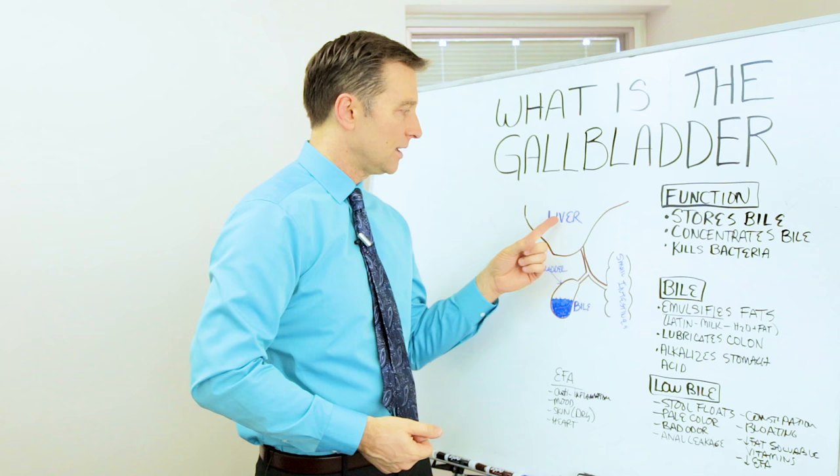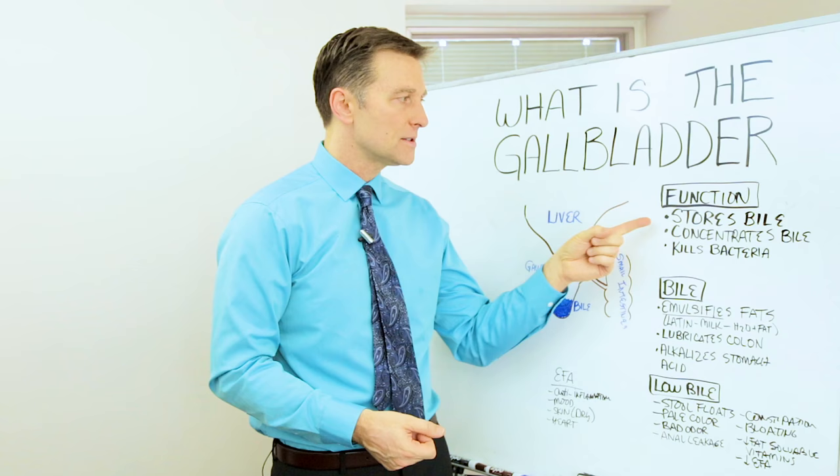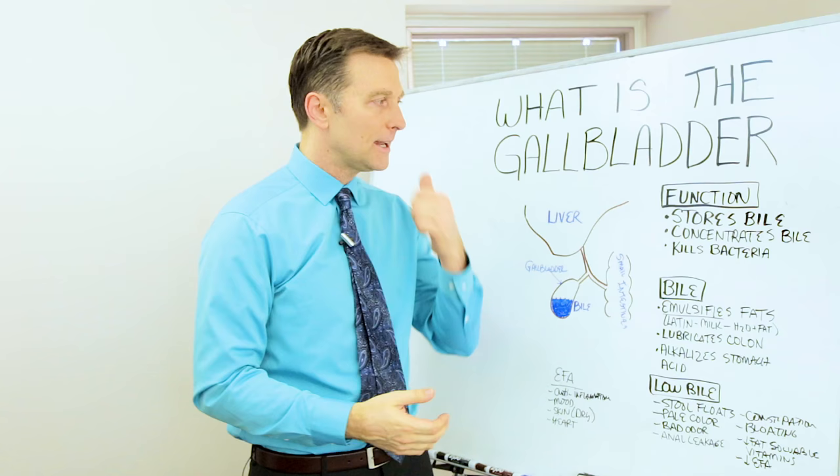Now, the gallbladder is located underneath the right ribcage, right here. You can see this is the liver on the right side. It has a little tube. The liver makes a fluid that goes into the gallbladder. And the gallbladder basically stores bile, B-I-L-E.